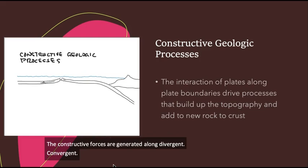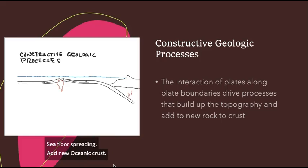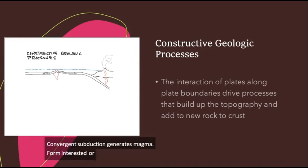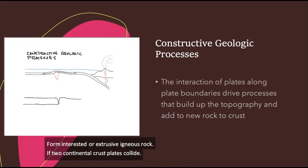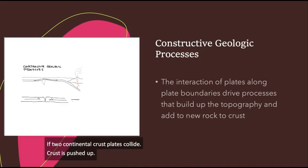Along divergent boundaries, seafloor spreading continually adds new oceanic crust, moving up the ocean floor, or builds new mountains on land. While along convergent plate boundaries, subduction generates magma that rises to Earth's surface to form intrusive or extrusive igneous rock. If two continental crust plates collide, the crust is pushed up to make mountains. In either case, Earth's surface is being built up and or new rock is being added.